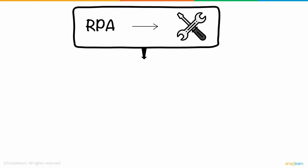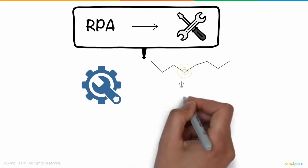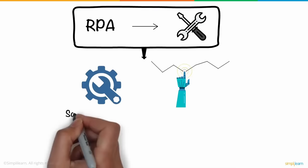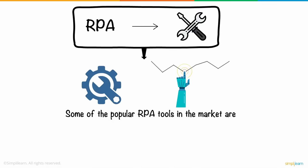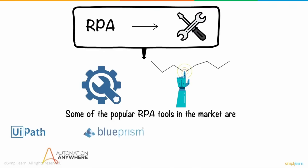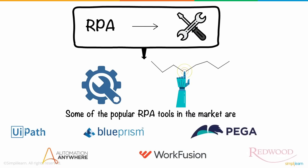Some of the popular RPA tools in the market are UiPath, Automation Anywhere, Blue Prism, WorkFusion, Pega, and Redwood, among others.